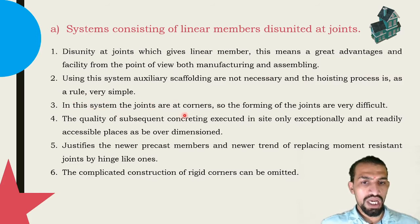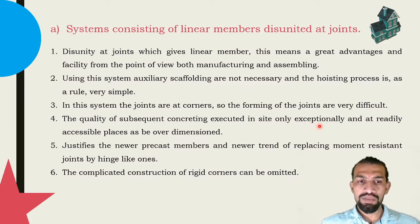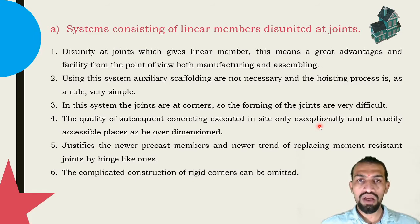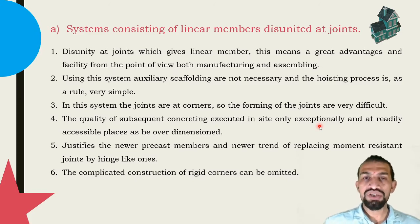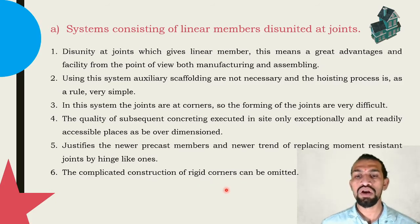In this system the joints are at corners, so forming the joints is very difficult. The quality of subsequent concreting executed inside only exceptionally accessible places justifies the newer precast members and the newer trend of replacing moment-resistant joints with hinge-like ones. Earlier we used to have fixed joints and fixed moments; now we are treating those as hinges. Once a hinge joint is used, the moment at that location is reduced to zero, and the complicated construction of rigid corners can be omitted.